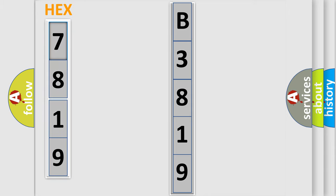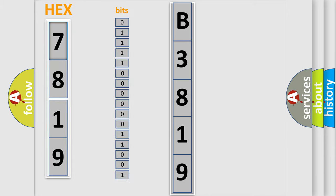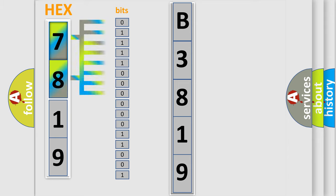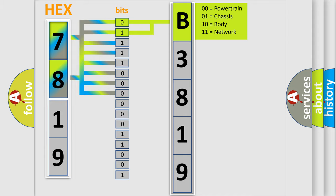The error code is split into two bytes consisting of 16 bits. One bit is the basic unit that each computer works with. The bit has two logical states: zero, low level, and one, high level. By combining the first two bits, the basic character of the error code is expressed.